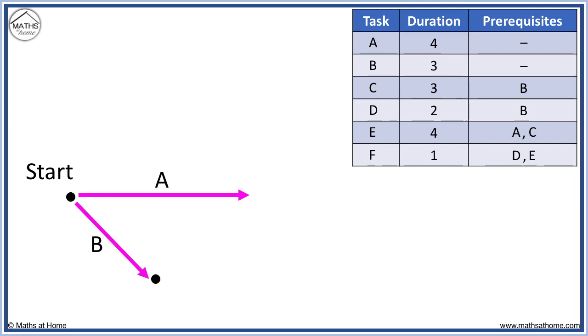Now task C has task B as a prerequisite. Task D also has task B as a prerequisite. This means that both tasks C and D must follow on from task B coming out of its end node.